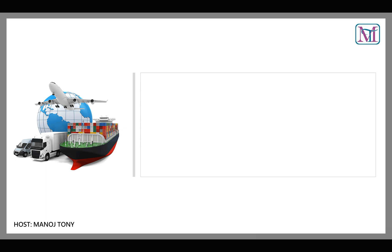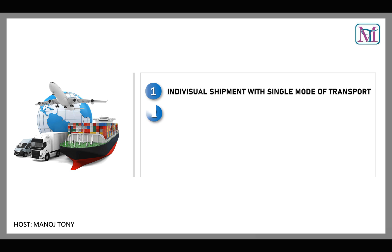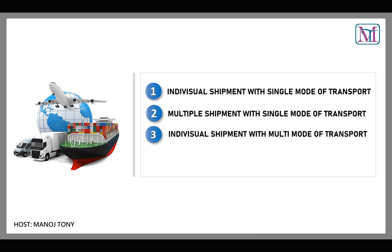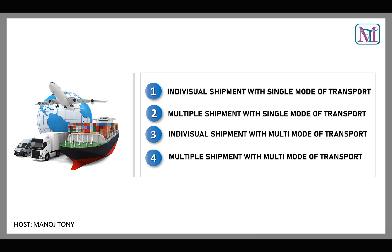So here we have four shipment processes. The first process is individual shipment with single mode of transport. The second is multiple shipment with single mode of transport. Third is individual shipment with multi-mode of transport. And fourth is multiple shipment with multi-mode of transport. We will do configuration and end-to-end testing for each scenario in both ECC and S4 HANA environments.